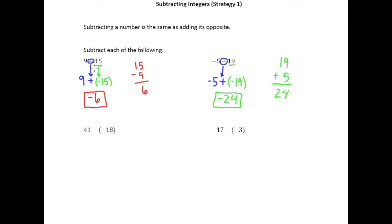So in both cases we were subtracting a positive number and that turned into adding a negative number. Now in this example we're subtracting a negative number. And so we can kind of do the same thing here. We're going to circle our subtraction sign.